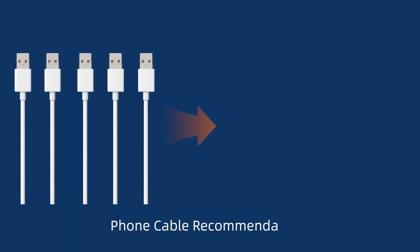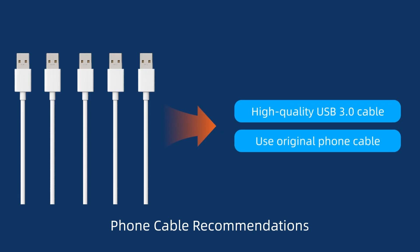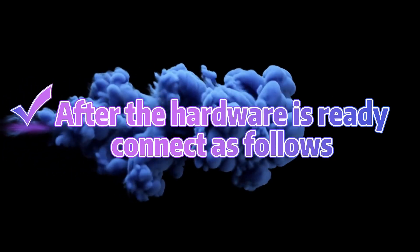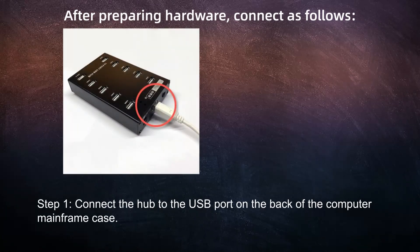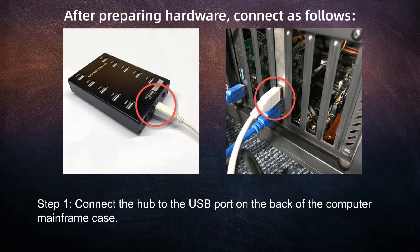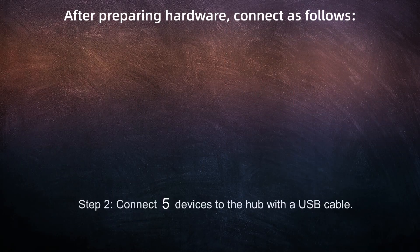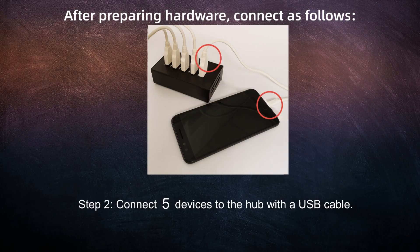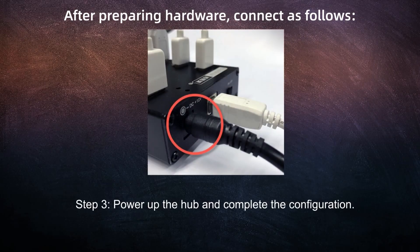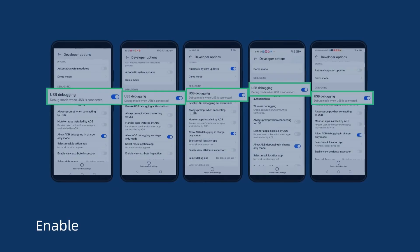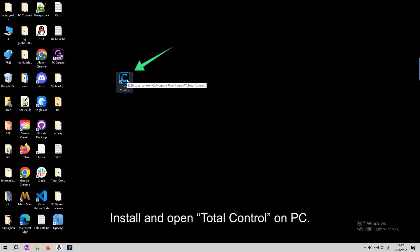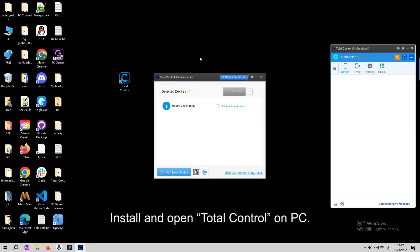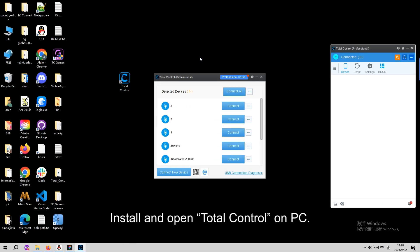USB cable recommendations: high quality, USB 3.0, and best to use original phone cables. After the hardware is ready, connect as follows. Before you connect, turn on USB debugging on all your Android phones. Then, install and open Total Control on your PC. When it detects all the phones, click Connect All.